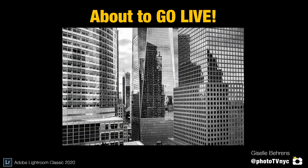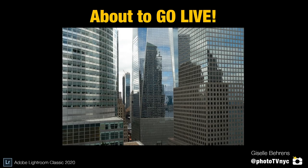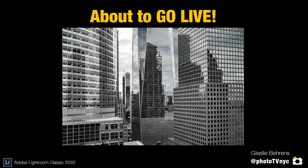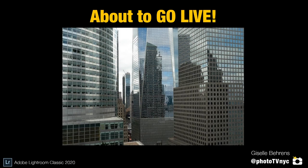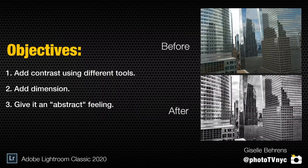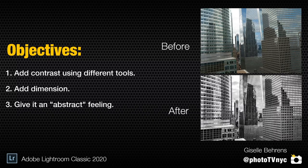If you want to create a really cool black and white photo with your urban landscape, take a look on screen at the photo we will be fixing up today. We're going to be editing this amazing photo taken around fall, with beautiful reflections on the window in the downtown financial district of New York City. Our objectives are to add contrast using different tools, and you're going to see exactly what I mean by that.